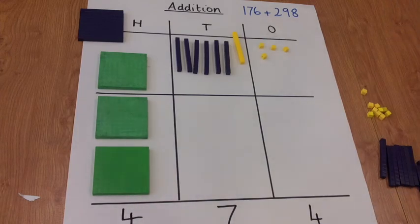Our answer to our calculation, 176 plus 298, is 474.